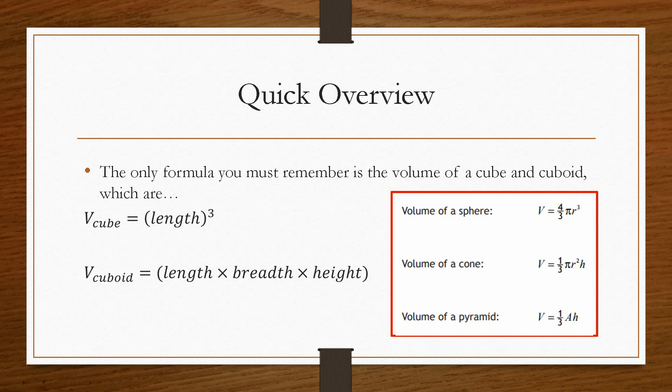Now the volume of a cuboid is pretty much exactly the same, but the length, the breadth, and the height, these can be different values. But either way, they still bring with it. So if we imagine our cuboid was in centimetres, then this would be centimetres times centimetres times centimetres. So we add the indices, so we get to the power 3.